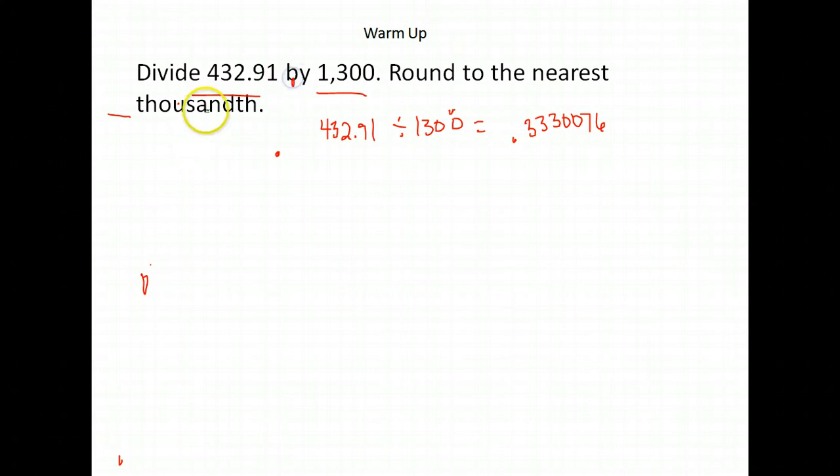They wanted it rounded to the nearest thousandth, which is 3 places after the decimal. This is tenths, hundredths, thousandths.